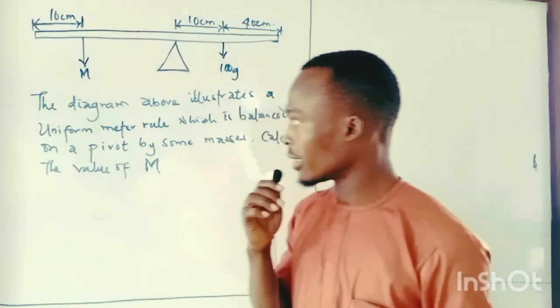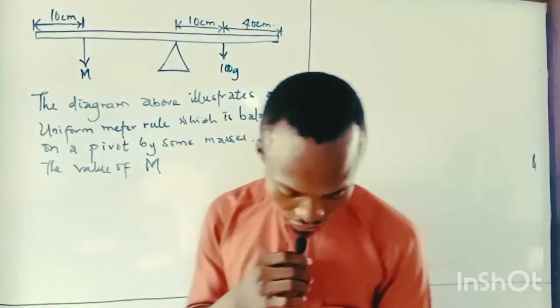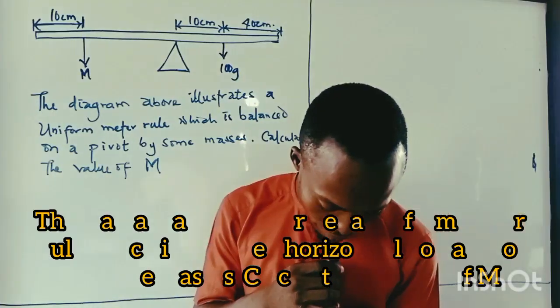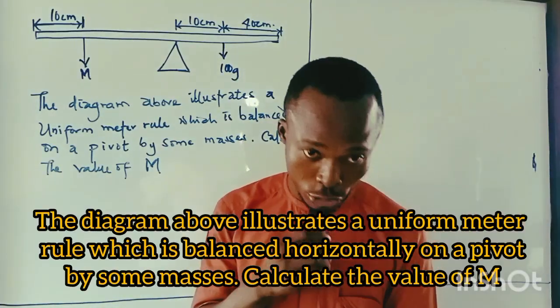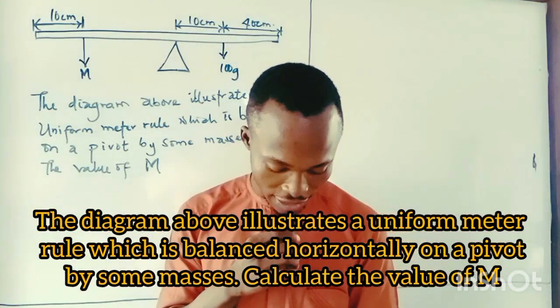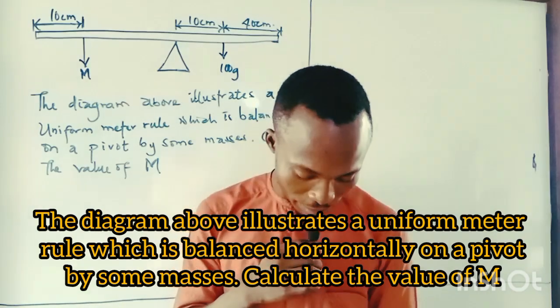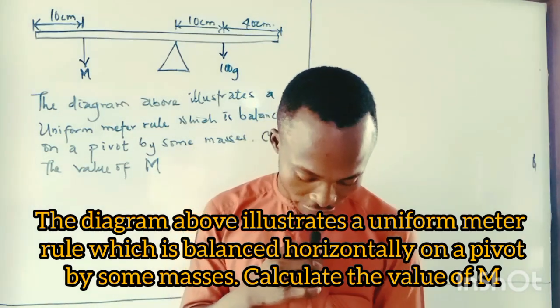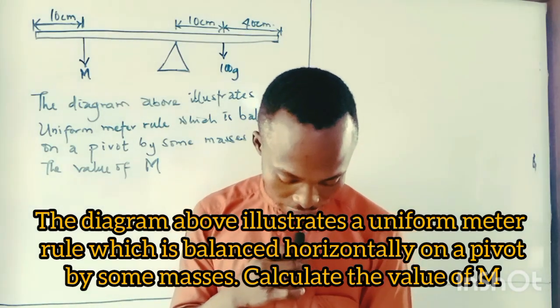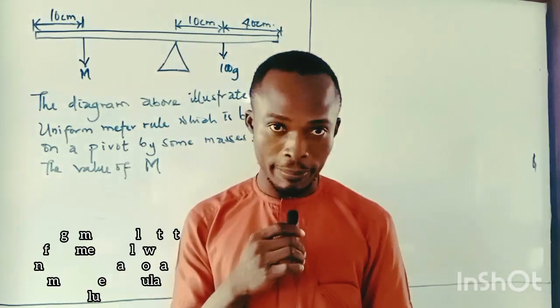The question is clearly written boldly on the board. It says that the diagram above illustrates a uniform meter rule which is balanced on a pivot by some masses. Calculate the value of M.